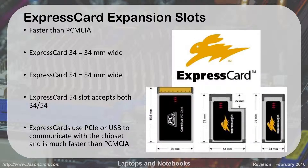Express Cards use PCIe as the internal bus, or they use USB on the host to communicate with the chipset, making them much faster than the old PCMCIA cards. Just like we went from PCI to PCI Express on desktops, we went from PCMCIA cards to Express Cards on laptops. These are really used for things like an internal cellular card.